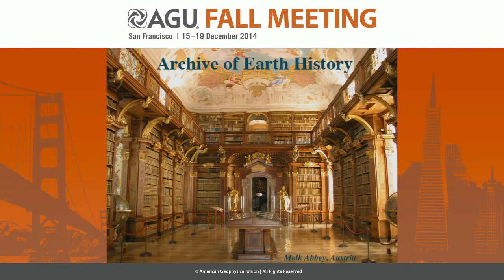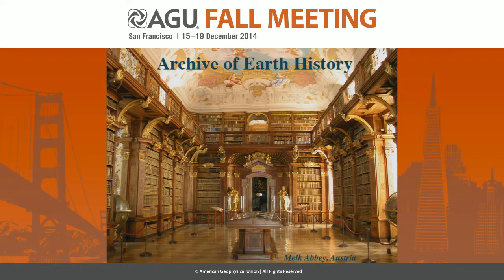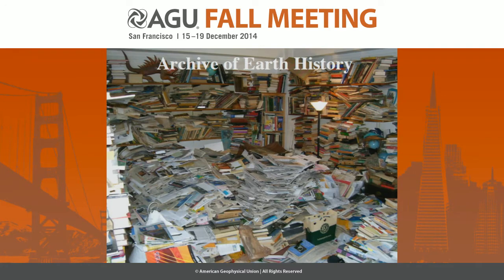The first question is: why do we care about when the continental crust formed? The easiest way to argue for the importance of this study is that the continental crust forms the archive of Earth history. As the Melk Abbey beautifully illustrates, it's important to have an archive, a library, to go back in time and understand how the continental crust grew. But unfortunately for the geologists, the continental crust looks less like the Melk Abbey and more like the office of a hoarder. So how do we extract information from an archive that looks like this?